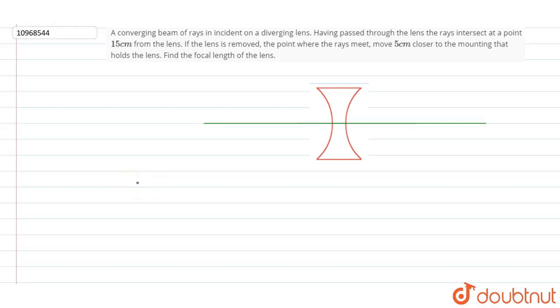In the video, a converging beam of rays is incident on a diverging lens. Having passed through the lens, the rays intersect at a point 15 cm from the lens. If the lens is removed, the point where the rays meet move 5 cm closer to the mounting that holds the lens. Find the focal length of the lens.